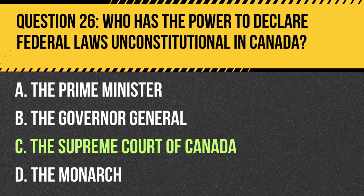Answer: C. The Supreme Court of Canada. The Supreme Court has the authority to interpret the Constitution and can declare federal or provincial laws unconstitutional if they do not align with constitutional principles.